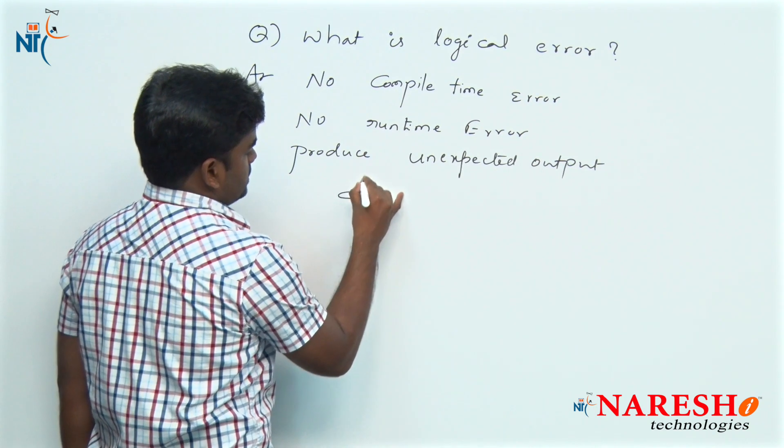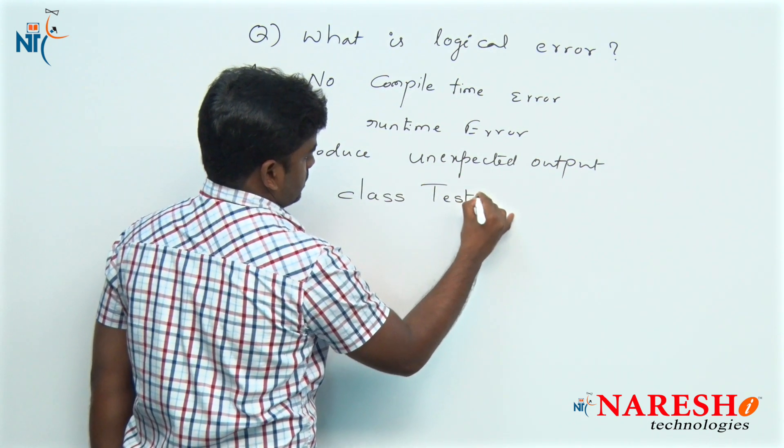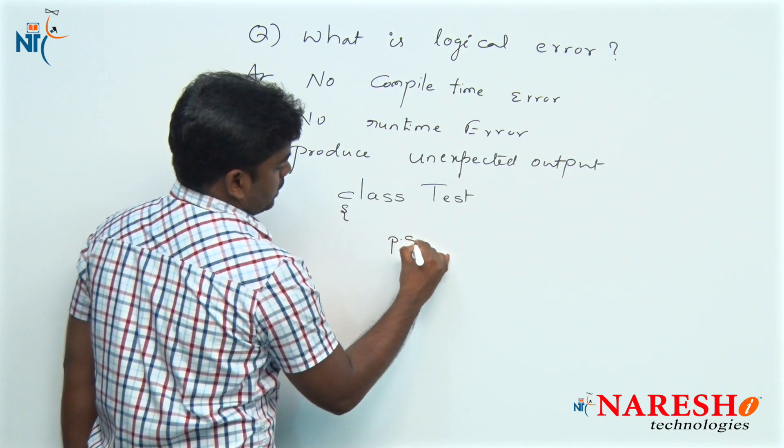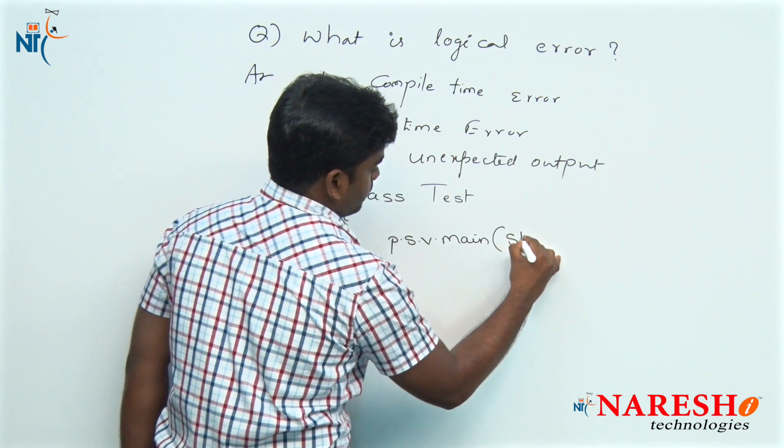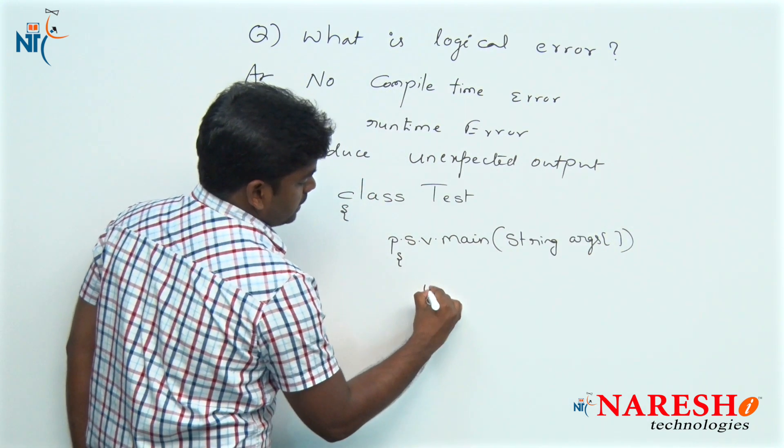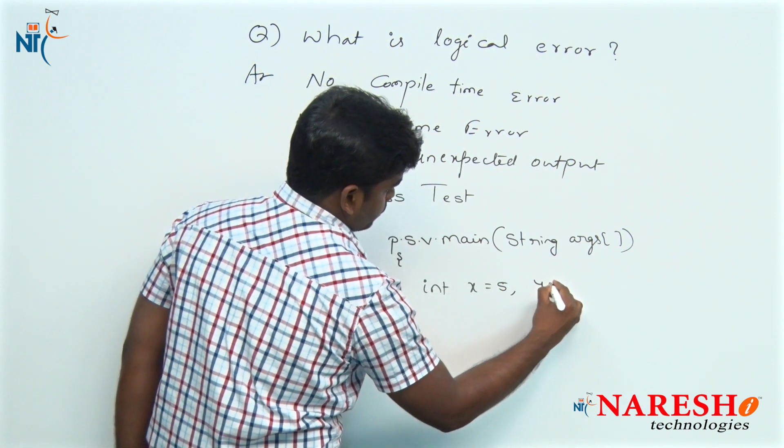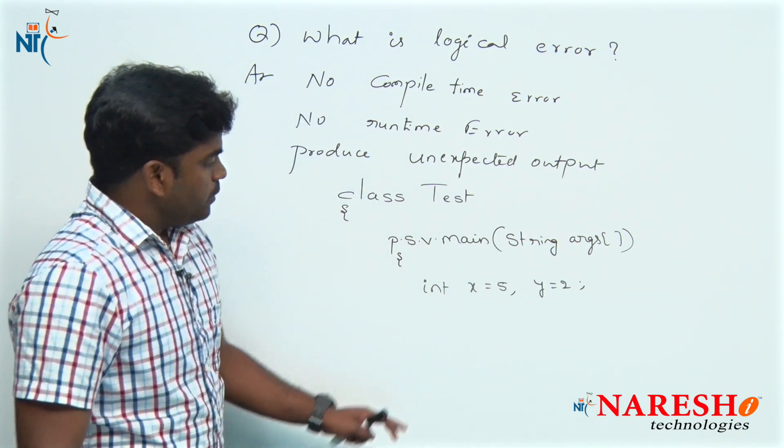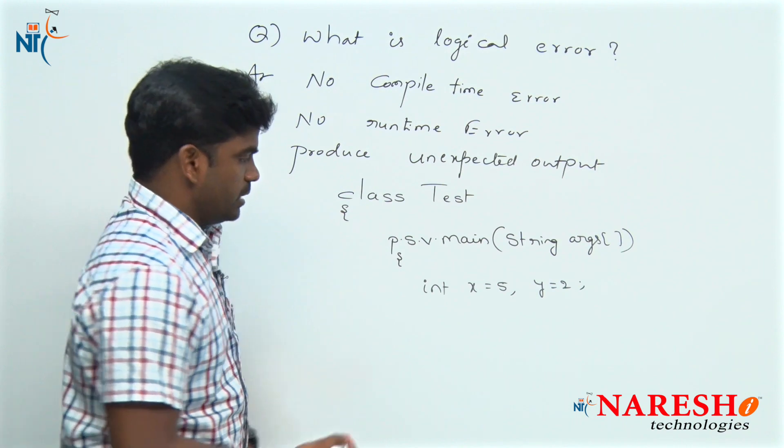For example, see the class Test. In that we are writing the main method: public static void main(String args[]). Here I am declaring one integer variable x with value 5, y value is 2, and I want to perform division operation among x and y.